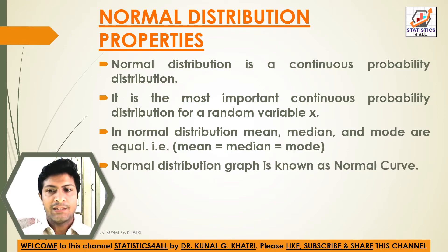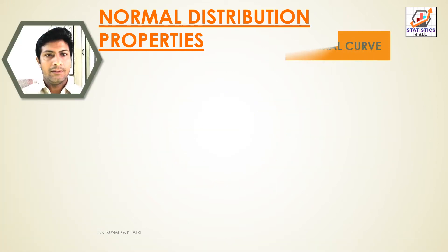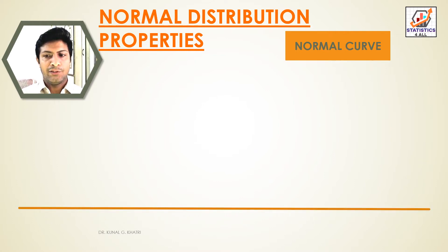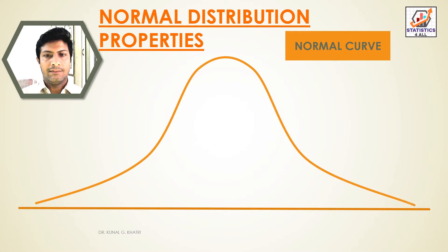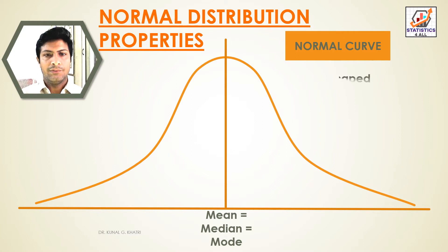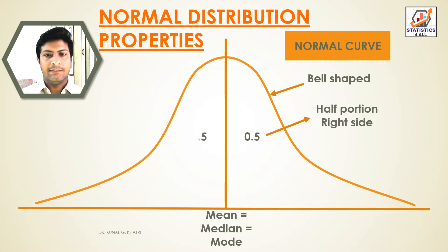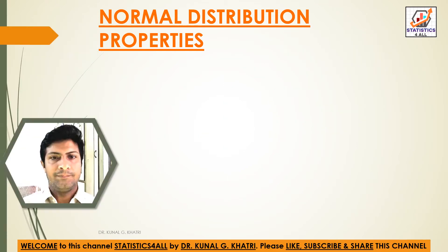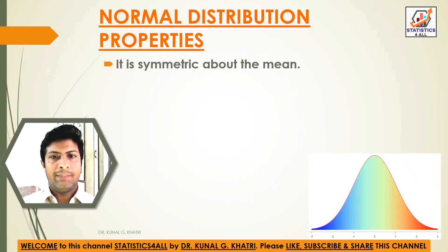The Normal Distribution graph is known as the Normal Curve. The Normal Curve is bell-shaped. We can see this horizontal line and this vertical line, and here we can see that mean is equal to median is equal to mode. This is bell-shaped. Half portion (0.5) is on the right side and half portion (0.5) is on the left side. It is symmetric about the mean.